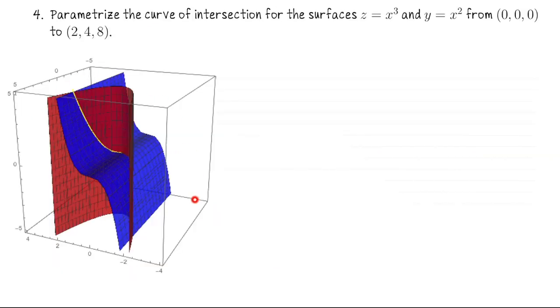Okay, now let's look at this example. And I made a picture of what's going on here. So we want to parametrize the curve of intersection for the surfaces z equals x cubed and y equals x squared from the origin to the point 2, 4, 8.